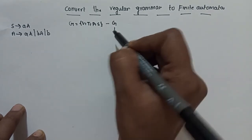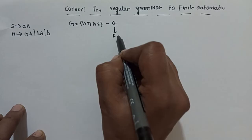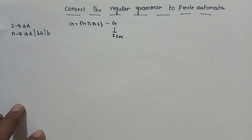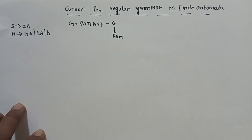For every grammar, there exists a finite state machine or finite state automata. According to our finite automata definition, finite automata has 5-tuples.